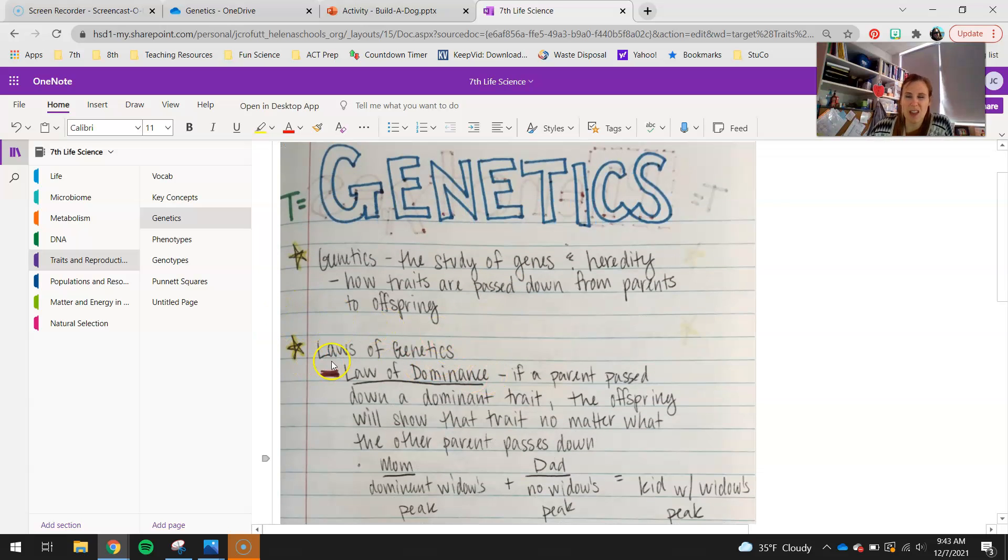The main law, there's three laws of genetics that we're only going to talk about really two of them. The first one is law of dominance, and we'll get into this a little bit more when we start doing Punnett Squares. But what we see is with certain traits, if a parent passes down a dominant trait to their child, that's what we're going to see in that child.